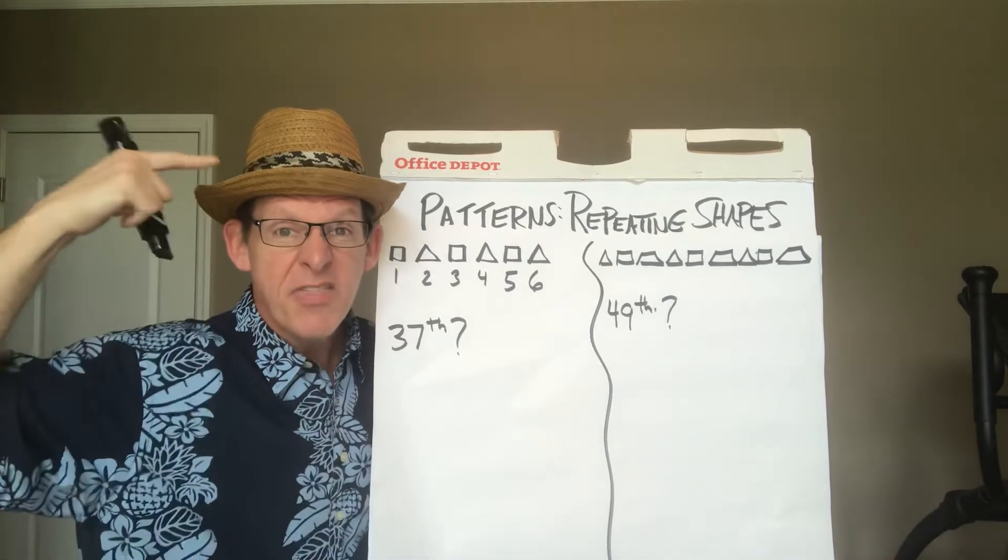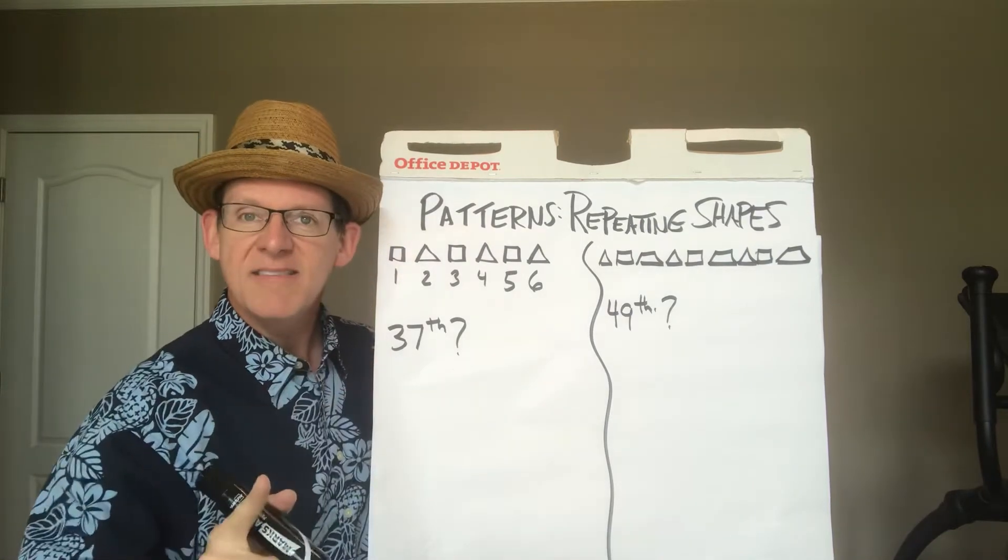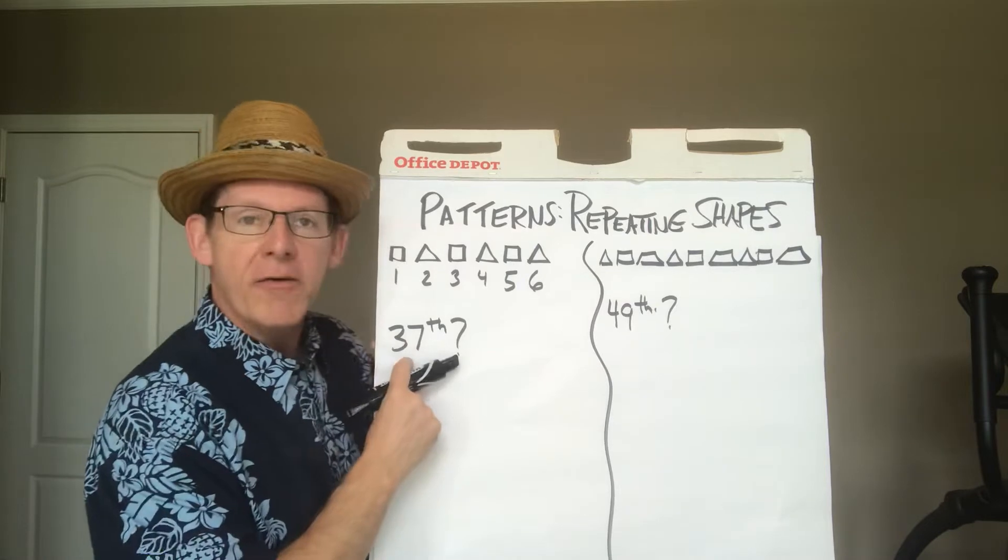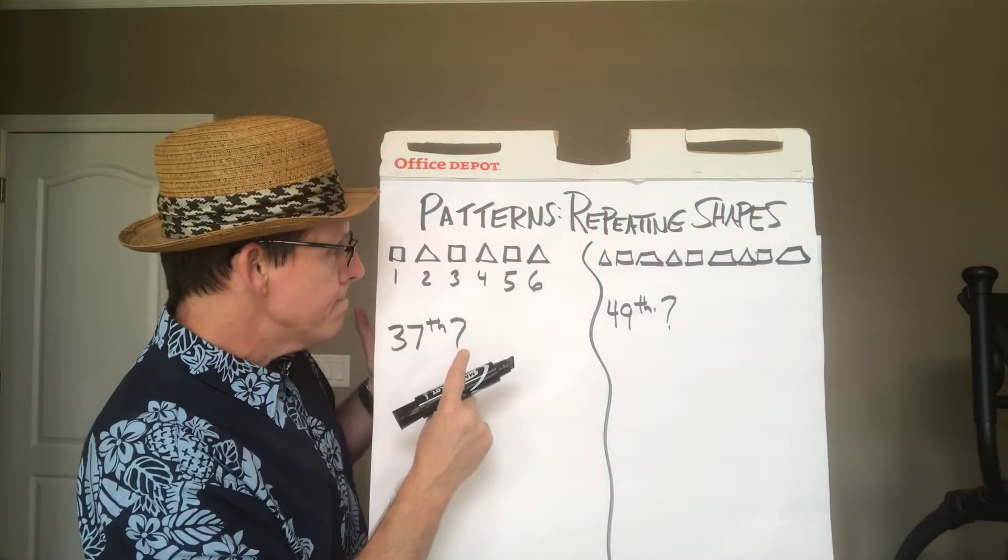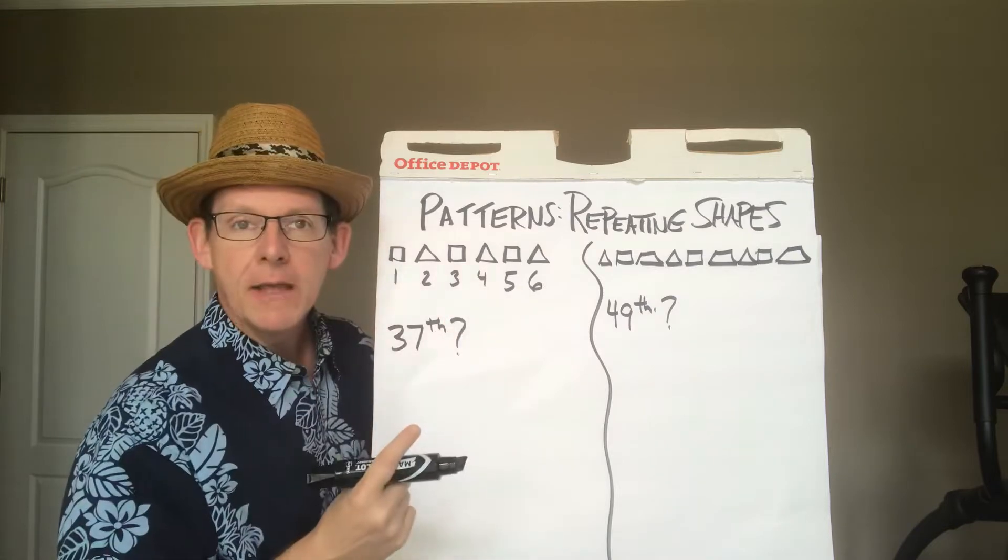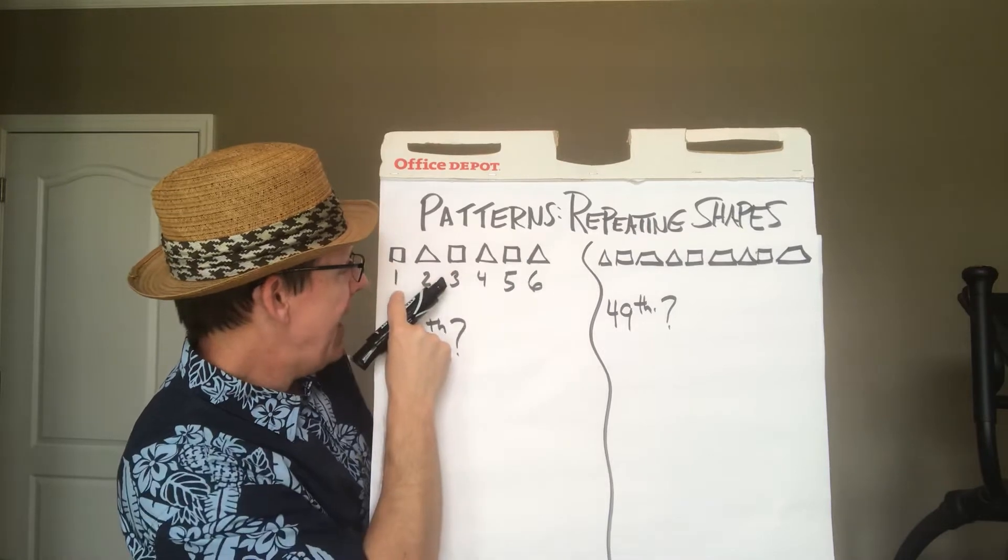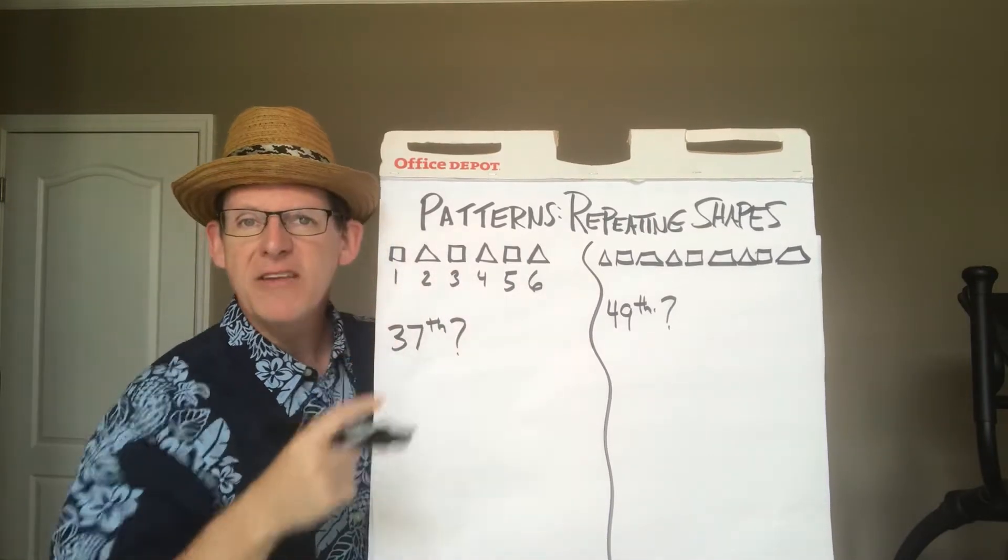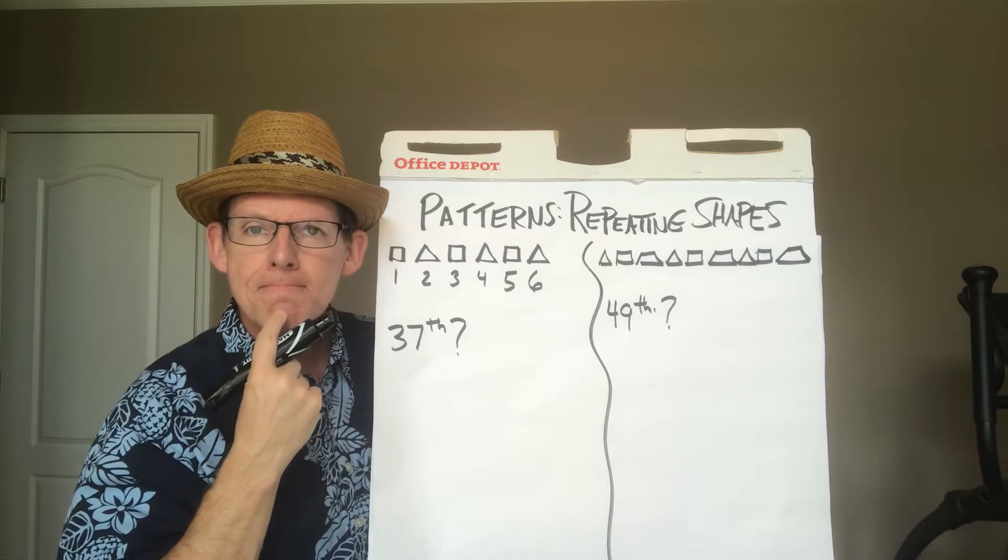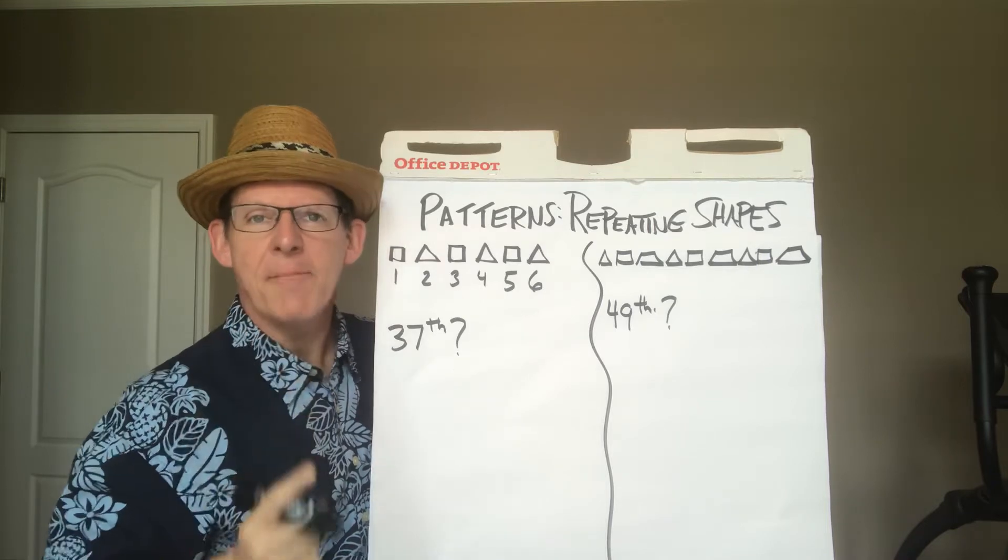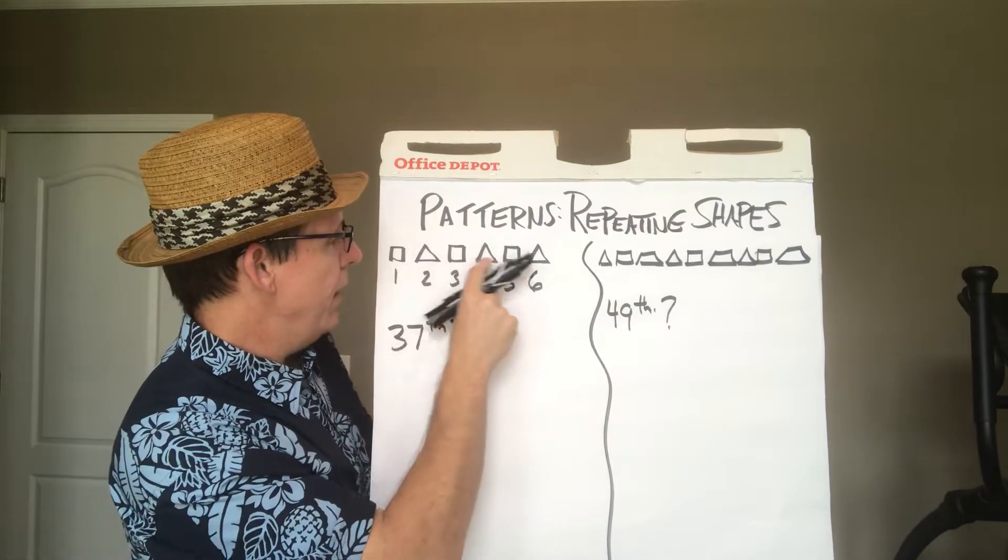So I've got my thinking cap on here, it's a little bit different this time. Let's stop and let's think. How could we figure out the 37th pattern without drawing the whole thing? Let's stop and think. Do you see anything about the pattern and the number of each shape? Well let's stop and think for a second. Let's look at the squares. Square, square, square.